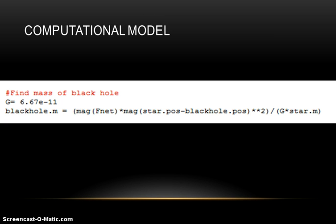Towards the end of the code, I finally used the gravitational formula where g equals approximately 6.67e-11. Then I rearranged it and solved the mass of the black hole.